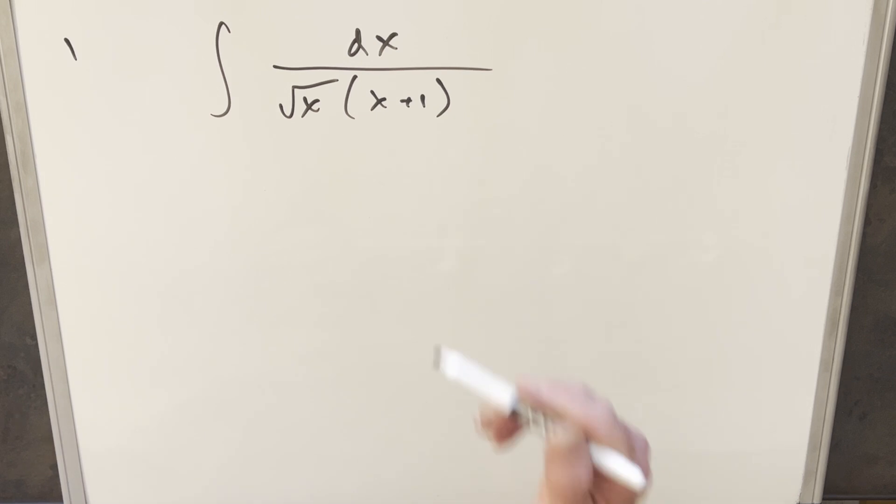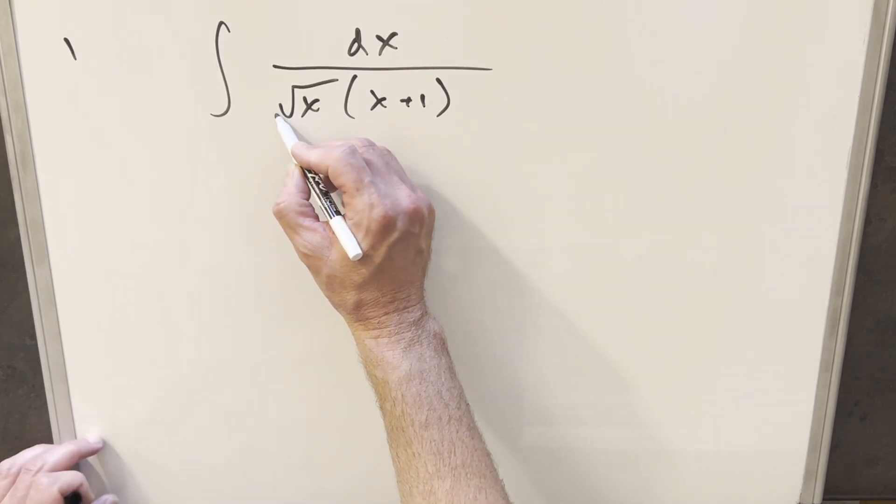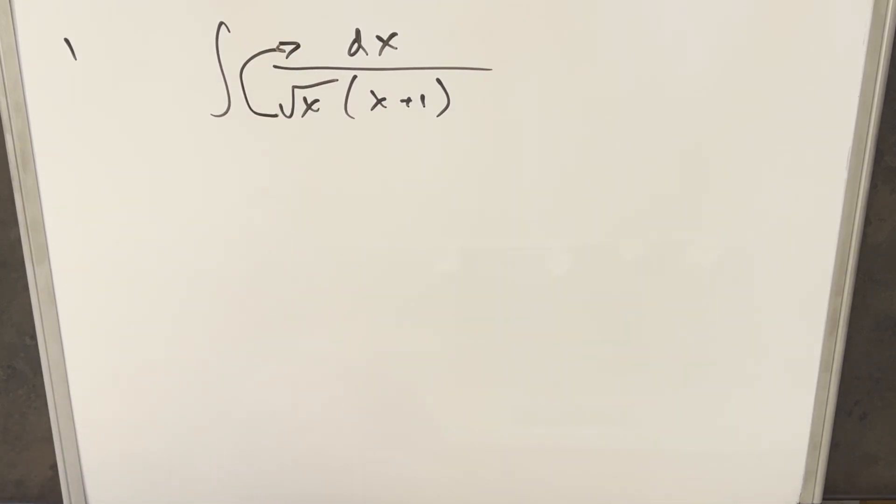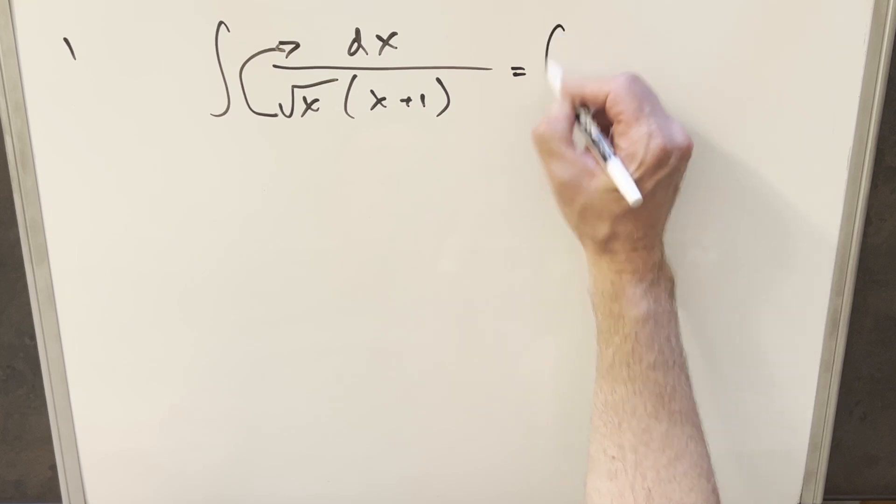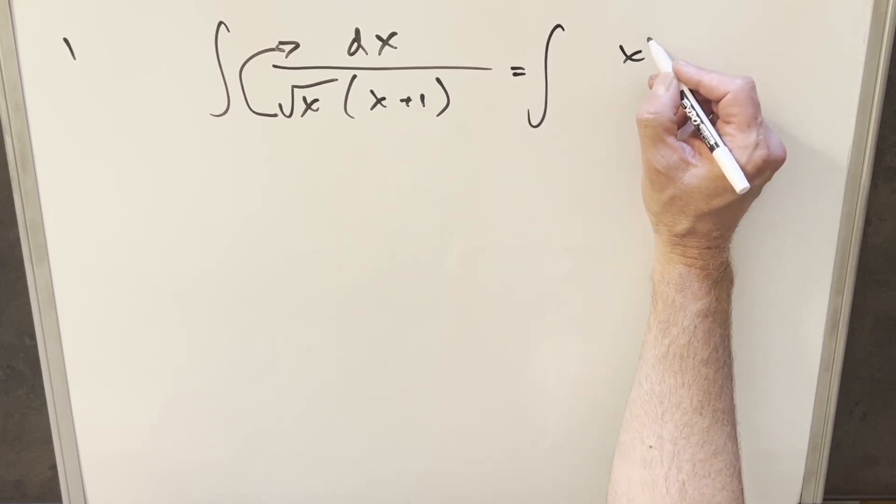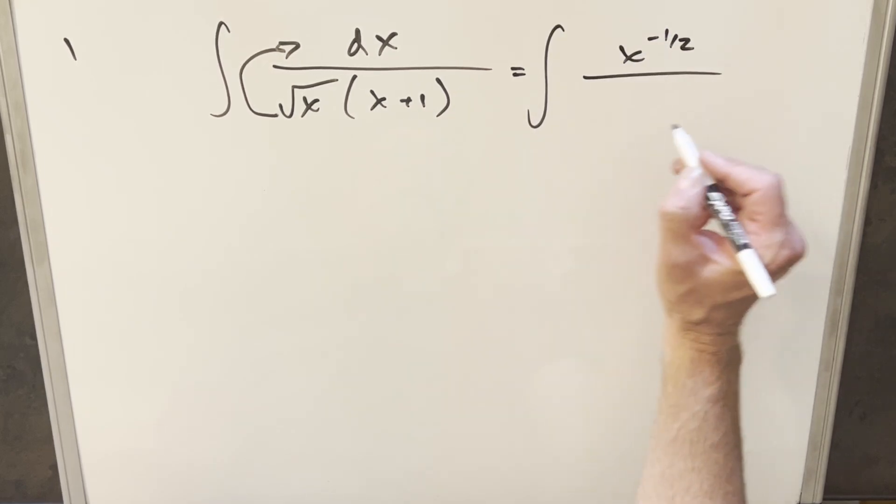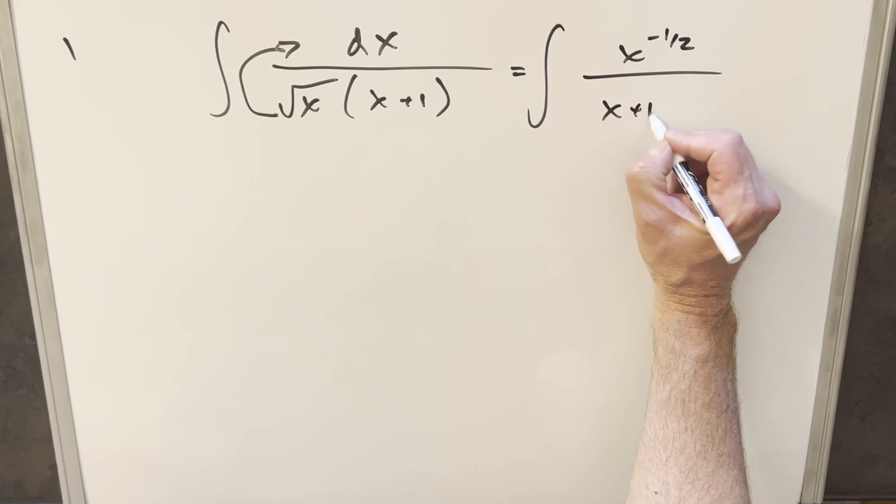There's probably a few different ways here, but what I did for this one was I just want to bring this square root of x into the numerator and see if we can do a u substitution. So when I rewrite it that way, I'm going to write this as x to the minus 1 half over x plus 1 dx.